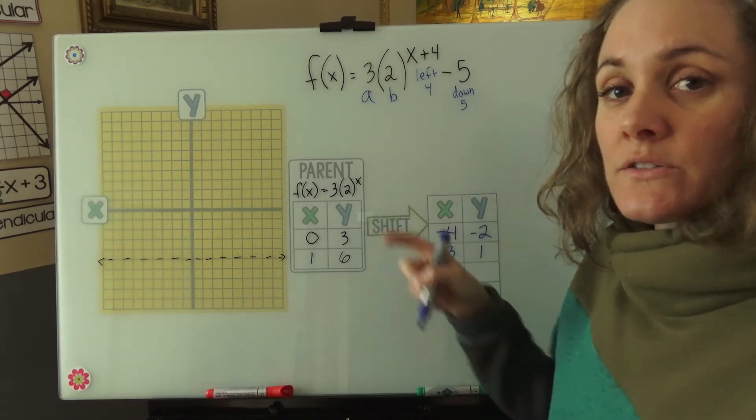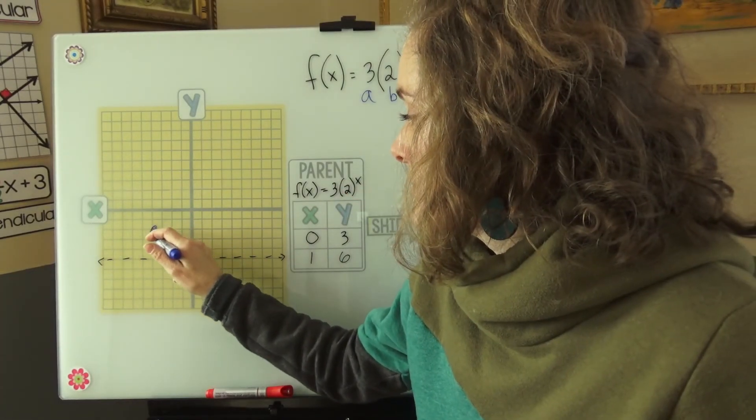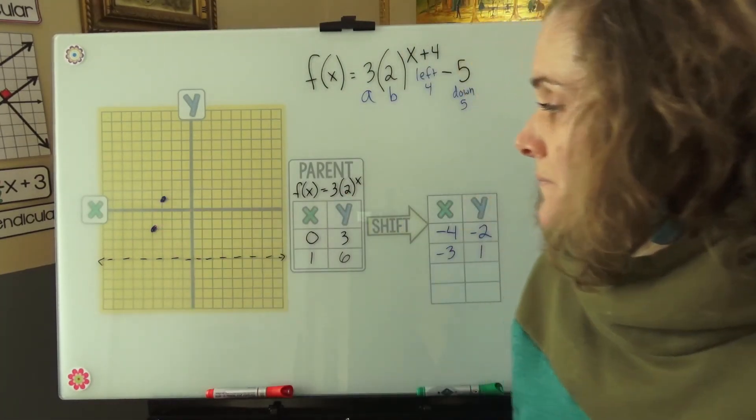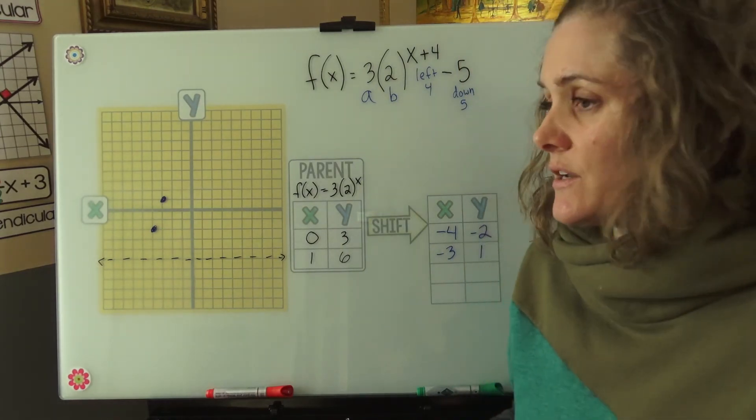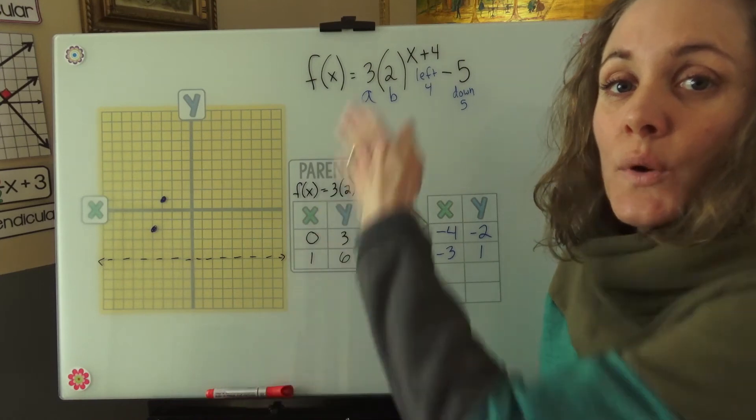Now we can plot these points on our grid. We have to remember the shape of exponential graphs. They kind of start out slow and then quickly rise.